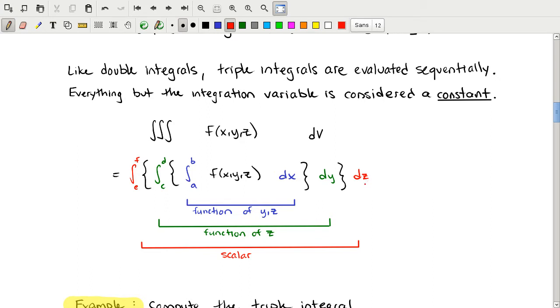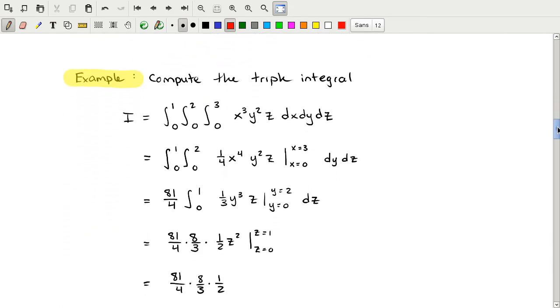Like we saw with double integrals, this can be evaluated sequentially. When we integrate f of x, y, and z in x, we hold y and z constant, and the x integrates out, leaving us with just a function of y and z. We then integrate that with respect to y, holding z constant, and the y integrates out, giving us only a function of z. Finally, we integrate that function of z from e to f, and we get a scalar, which is what we expect if we're trying to calculate something like mass, which is expressed as a number.